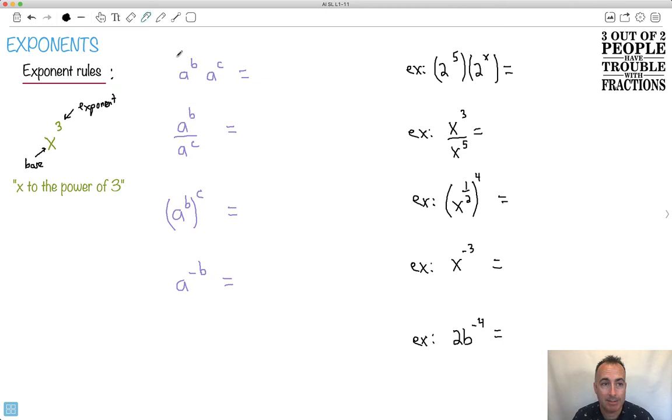So if we have something like a to the b, here are the rules. These are not in your formula booklet, so you do need to know these. A to the b times a to the c. These both have the same base. This bottom number right here is called the base. So a to the b times a to the c, because they have the same base, we can say it's a to the power of b plus c. This is our first of our important exponent rules.